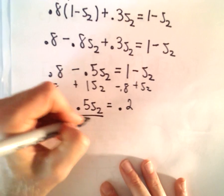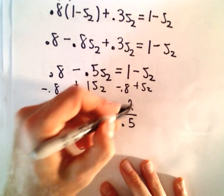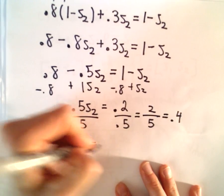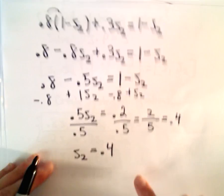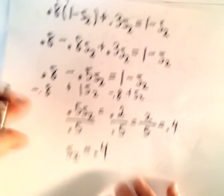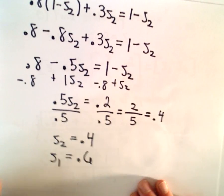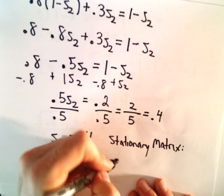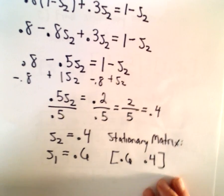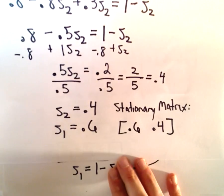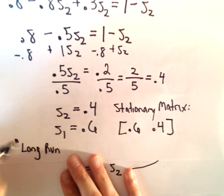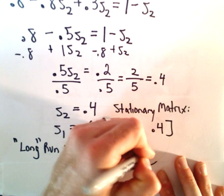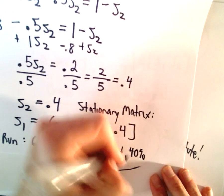Now we divide by 0.5. We could multiply numerator and denominator by 10 to give us 2 fifths, and 2 fifths is the same thing as 0.4. So S2 equals 0.4. And since we know these values together, S1 and S2, add up to 1, that tells me immediately that S1 is going to equal 0.6. So my stationary matrix will have entries of 0.6 and 0.4. The first entry corresponds to people using rapid transit. In the long run, we can expect 60% of people to use the rapid transit, and the other 40% will continue using automobiles.